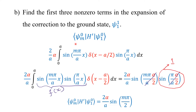So this inner product equals (2*alpha/a) times sin(m*pi/2). For even m, sin(m*pi/2) is a multiple of pi and becomes zero, so only odd m contributes. This term is zero if m is even.